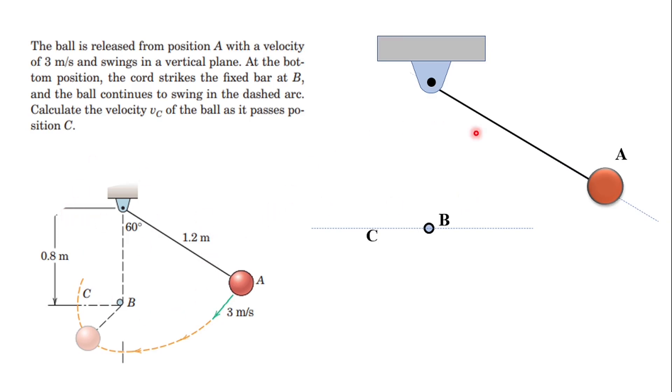The structure works with a mechanism as a pendulum. The ball is released from position A with a velocity of 3 meters per second and then it swings in a vertical plane.